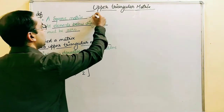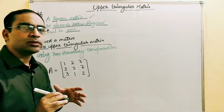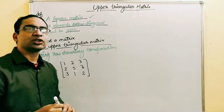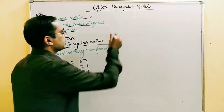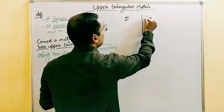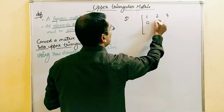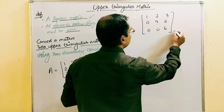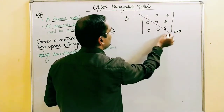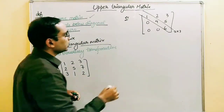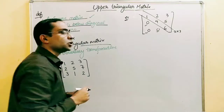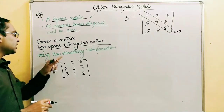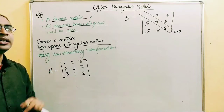There are two conditions for an upper triangular matrix. One: it has to be a square matrix, meaning the number of rows must equal the number of columns. Two: all elements below the diagonal must be zero. For example, the matrix with elements 1, 2, 3 / 0, 4, 5 / 0, 0, 6 is a 3×3 square matrix where all elements below the diagonal are zero, so this is an upper triangular matrix.